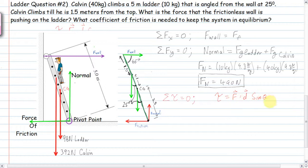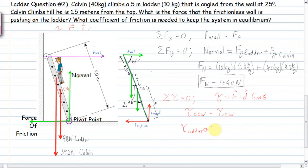That's why we don't use the normal force or the frictional force — the distance to the pivot point is zero so their torques equal zero. The torques counterclockwise have to equal the torques clockwise. The counterclockwise ones are the two forces of gravity pulling down — the torque of the ladder plus the torque of Calvin — and those have to equal the torque of the wall trying to spin it clockwise.